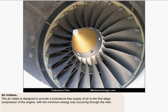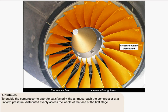The air intake is designed to provide a turbulence-free supply of air to the first stage compressor of the engine, with the minimum energy loss occurring through the inlet. To enable the compressor to operate satisfactorily, the air must reach the compressor at a uniform pressure, which is distributed evenly across the whole face of the first stage.